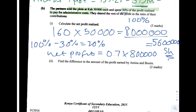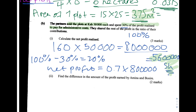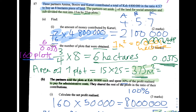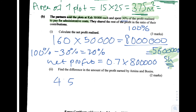Always remember your units when answering. Part B(ii): Find the difference in the amount of profit earned by Amina and Bosire. We use the net profit of 5,600,000 shillings and the original contribution ratios of 4:5:7, where Amina is 4/16 and Bosire is 5/16.